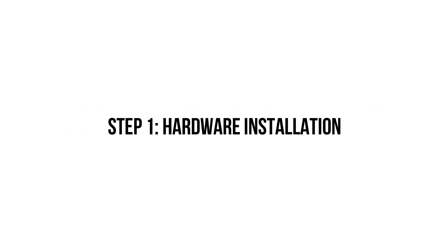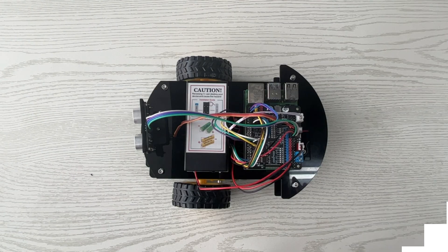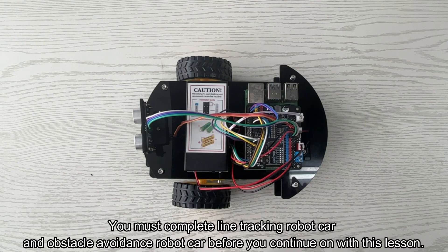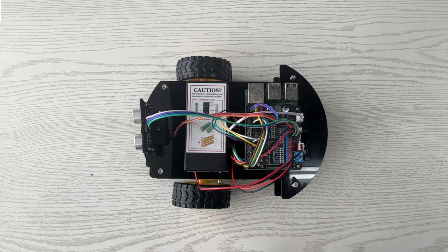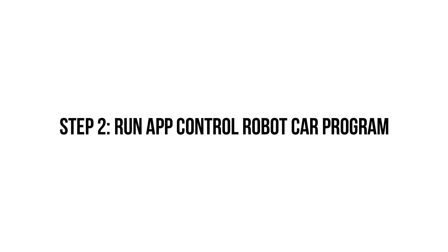Step 1: hardware installation. You must complete the line tracking robot car and obstacle avoidance robot car projects before you continue with this lesson. Step 2: run the app control robot car program.